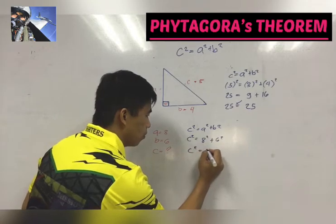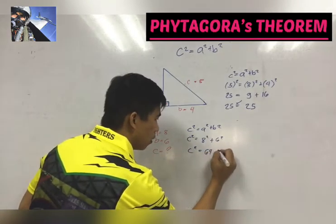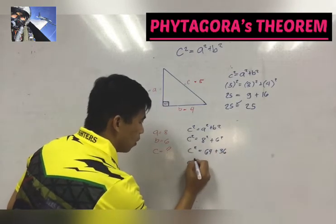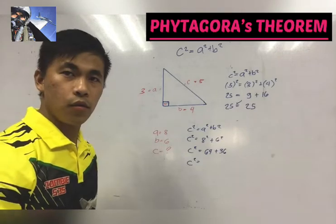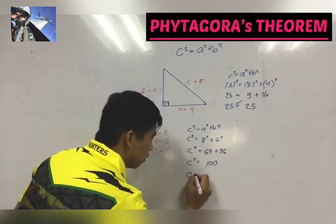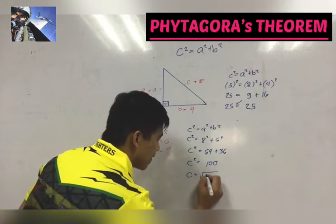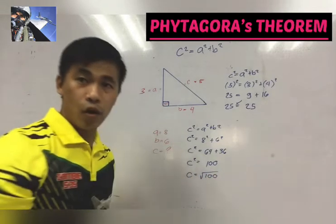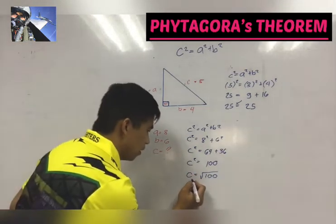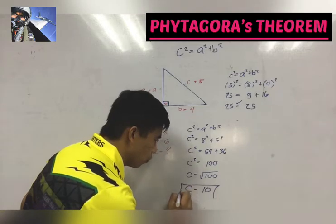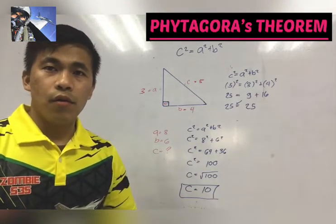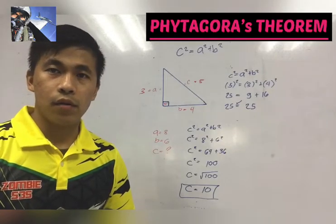So it became: square of 8 is 64, and the square of 6 is 36. So we have the sum of 64 and 36, we have 100. So it is very clear that C, or the hypotenuse, or the longest side of the right triangle is 10. We were able to find the side of a right triangle.